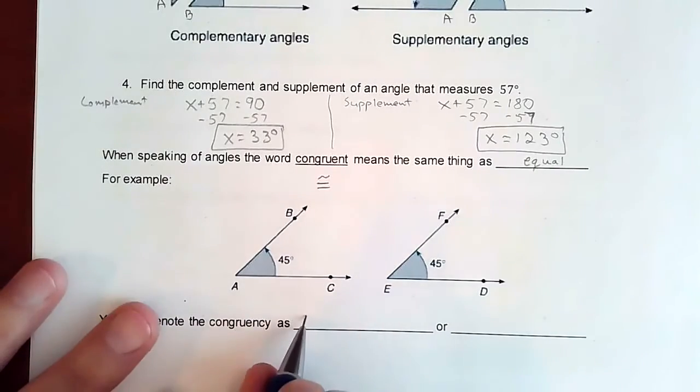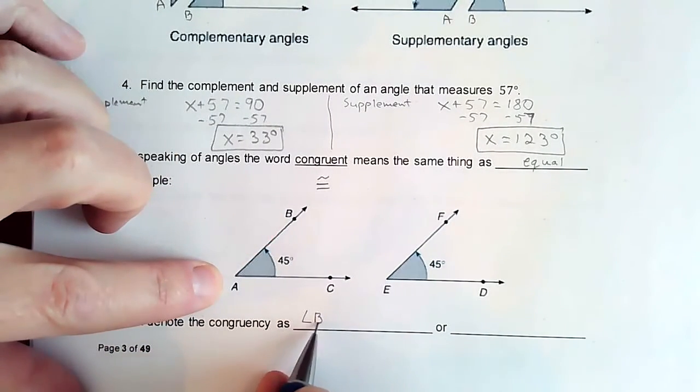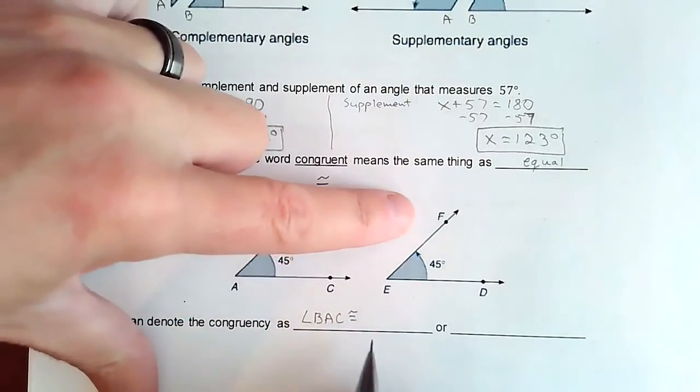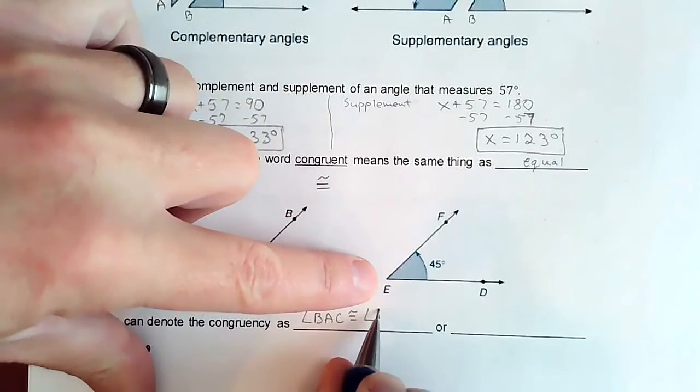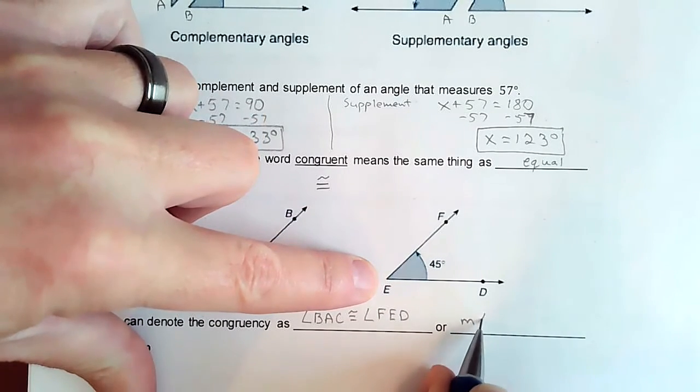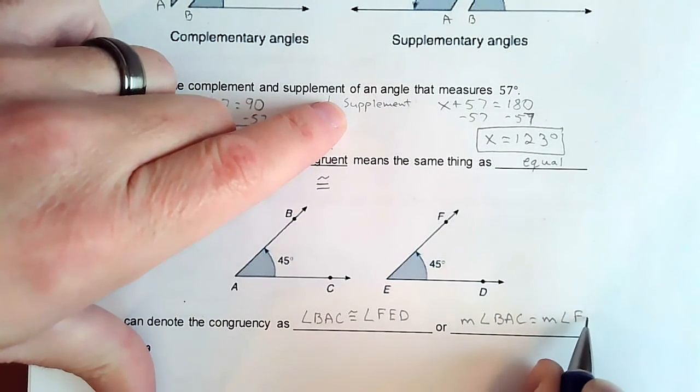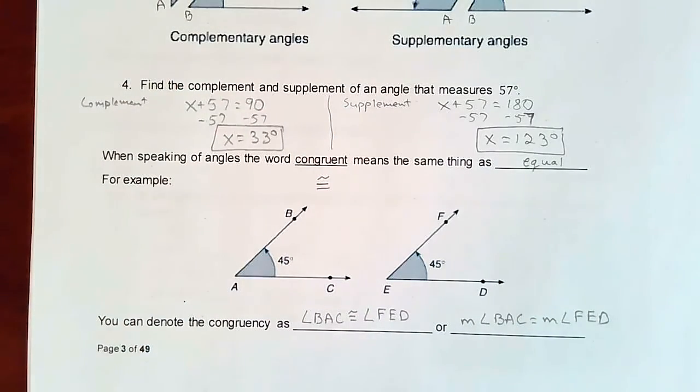So you can describe this as angle B, A, C would be congruent to angle F, E, D. Or you would say the measure of angle B, A, C would equal the measure of angle F, E, D. Okay. And that was classifying and categorizing angles.